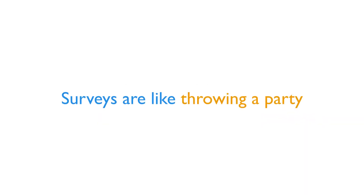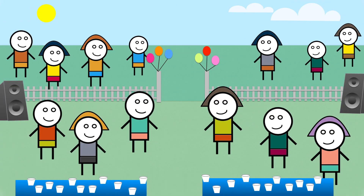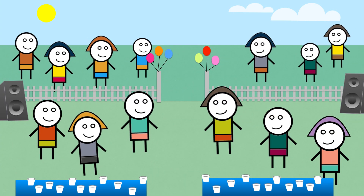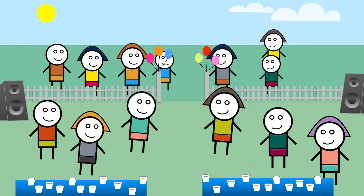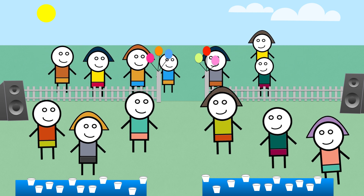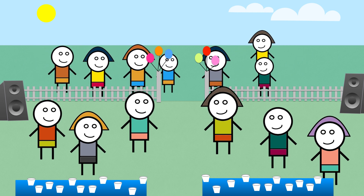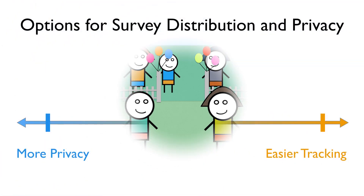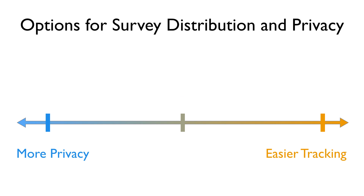Or to think about this from a completely new direction, imagine that the survey is like planning a great party. You want to have a lot of people come and have fun, but you need to figure out how to balance having a great crowd and avoiding any unanticipated problems. When it comes to sending out surveys and keeping the results private, it turns out that there are three main paths to pick from.